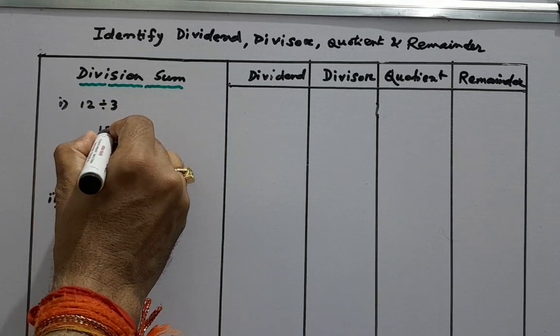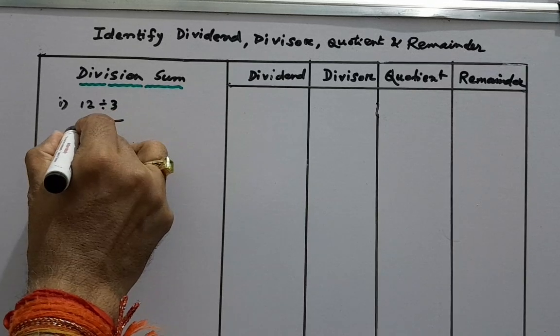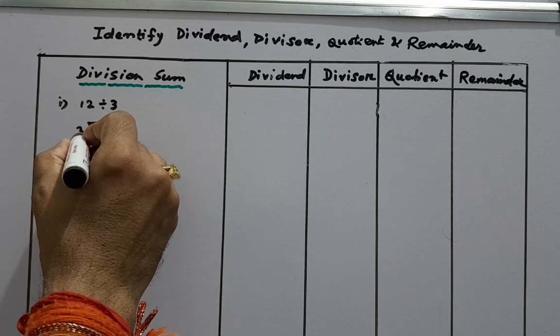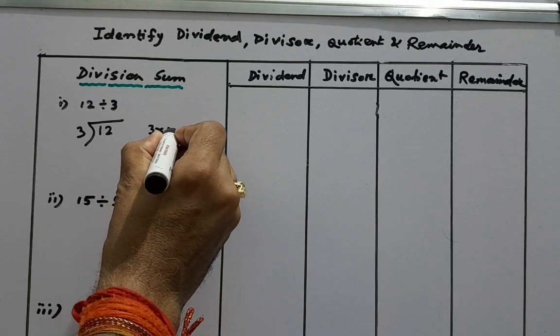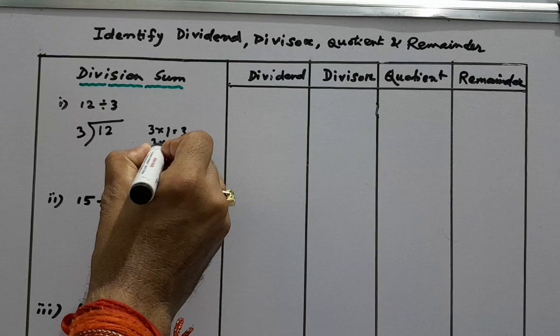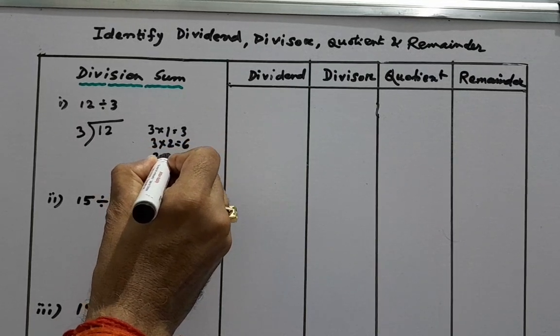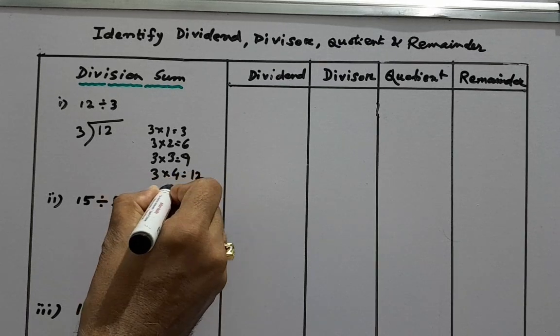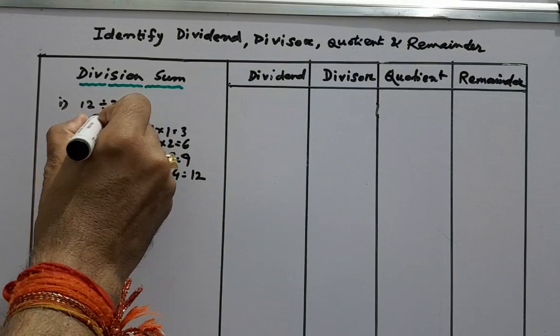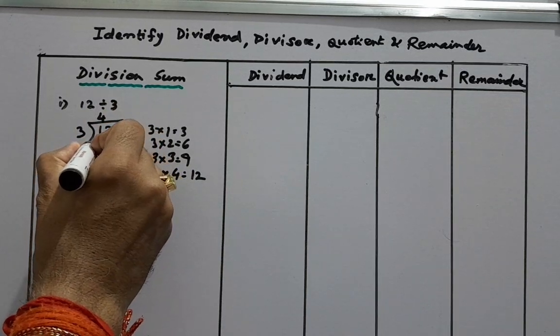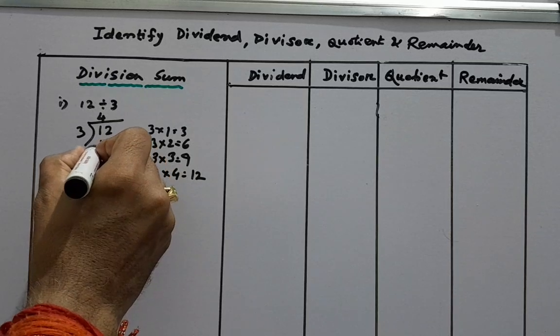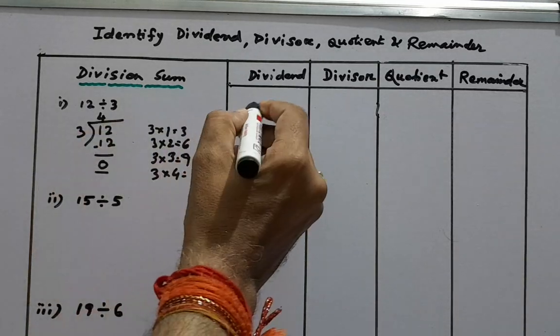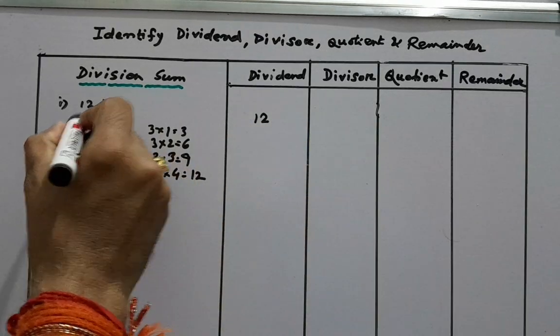So we will first divide it, 12 divided by 3. Now we will remember the multiplication table of 3. We know 3 ones are 3, 3 twos are 6, 3 threes are 9, 3 fours are 12. So 3 times 4 is 12. Now if we deduct it, 12 minus 12, so 0 will be the remainder. So here dividend is 12, then divisor is 3, then quotient that means result is 4 and remainder is 0.